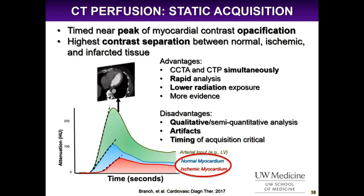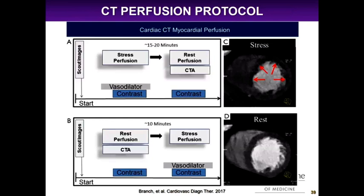This is one CT perfusion protocol, similar to nuclear imaging. You can do either stress-rest or rest-stress perfusion. For stress-rest: give a vasodilator such as adenosine with contrast, wait 15–20 minutes, then do a rest scan and assess the coronary arteries at the same time. For rest-stress: do a rest scan looking at the coronary arteries, wait 10–15 minutes, then do stress perfusion with a vasodilator and contrast. An example image shows normal resting perfusion with no defects, but on the stress image there is an anterior wall perfusion defect — consistent with ischemia, very similar to nuclear imaging.